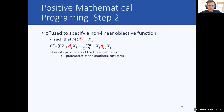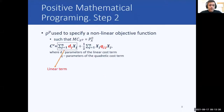To modify the objective function, the general variable cost function is employed, which has a linear term and a quadratic term. D and Q are the parameters of the linear and quadratic cost terms respectively. The dual values of the calibration constraints obtained in the first step are used to specify parameters D and Q, such that the marginal variable cost fulfills the required optimality condition.